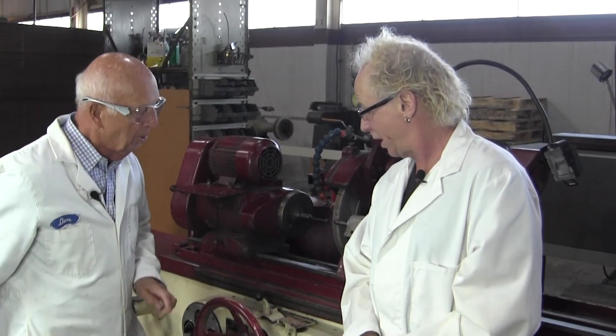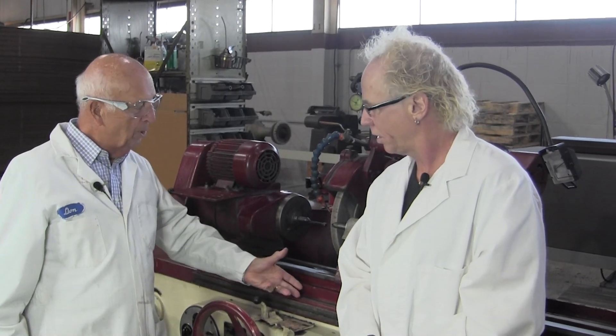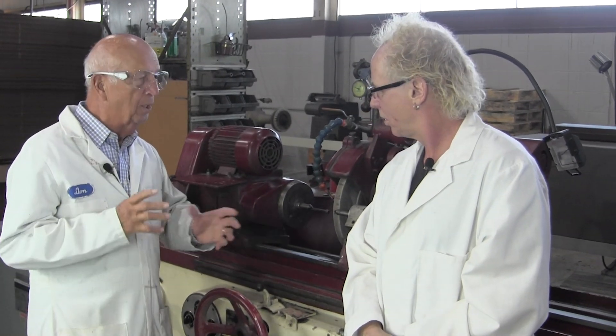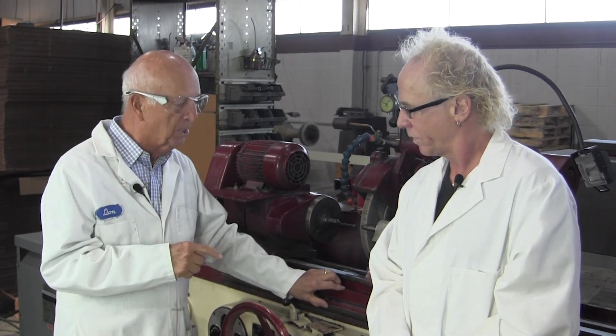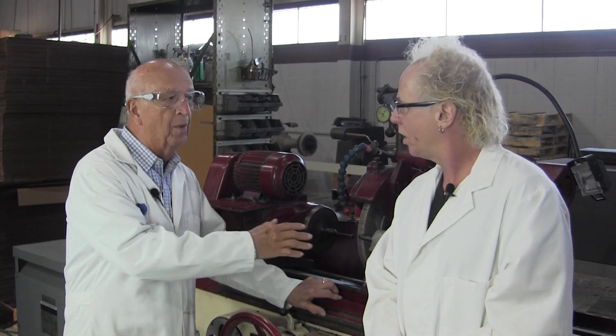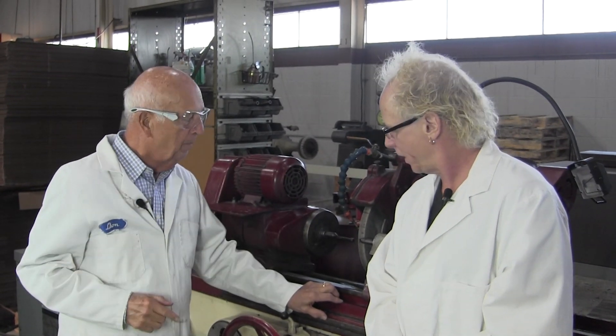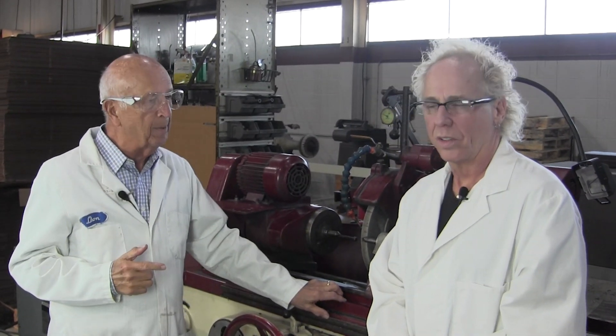What we need to do is get Dave out here to take this baby apart. We'll pull the bed off and take a look at the gear train inside. I know there's a series of gears in there that run between this handle and the rack here that makes this table move back and forth. We'll get Dave over here and take this puppy apart.